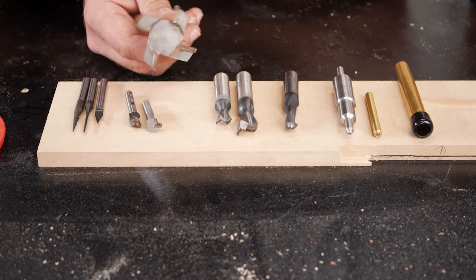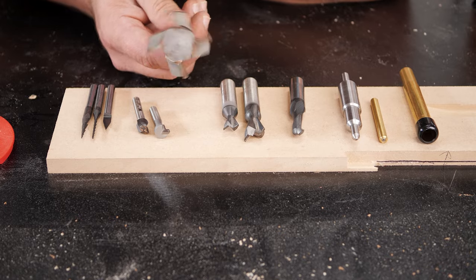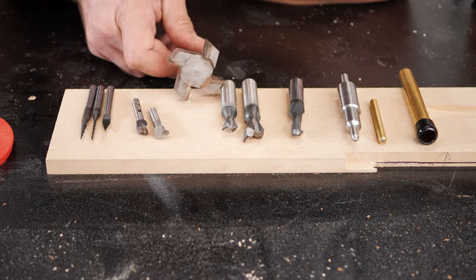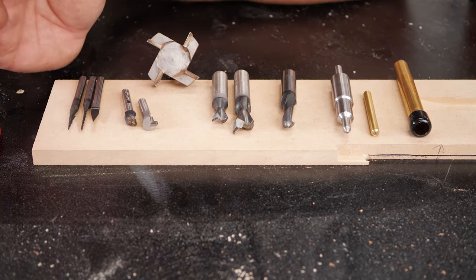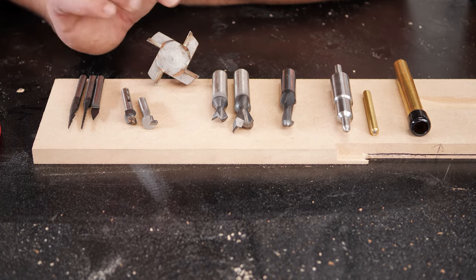This is a slab flattening or spoilsboard bit in the CNC. You would use this to flatten your spoilsboard or you could set up a router jig to flatten a slab. These are a little less obscure, but they're great bits. These are dovetail bits for creating sliding dovetails on the router table or with your handheld router.